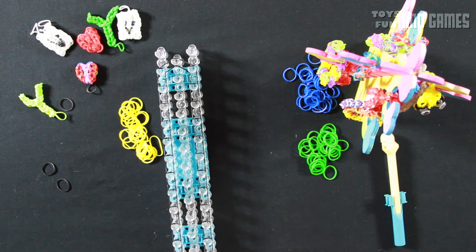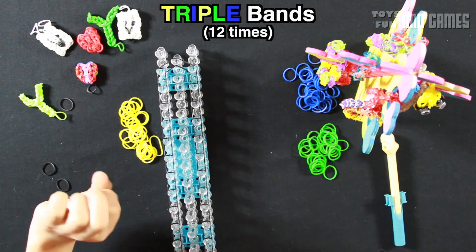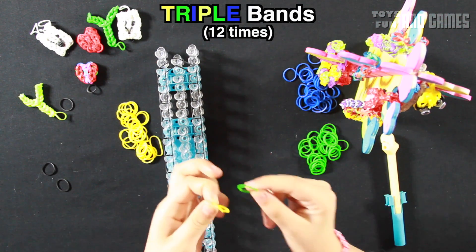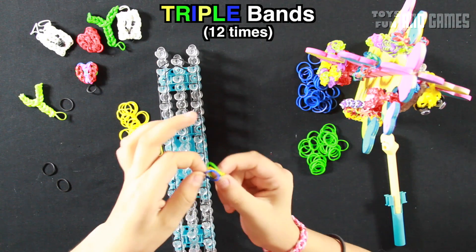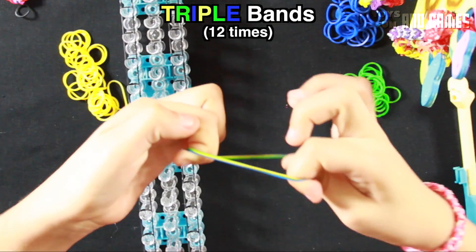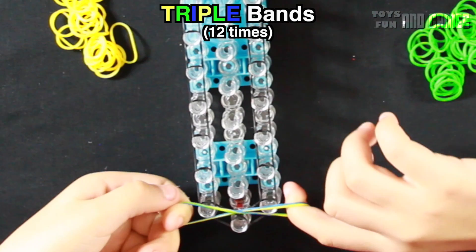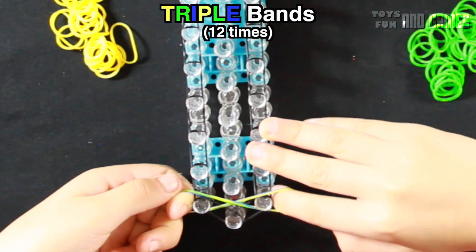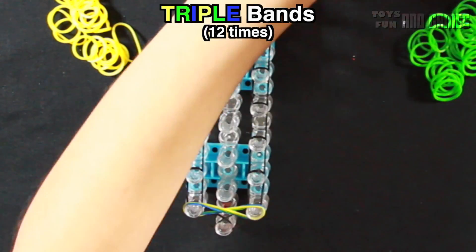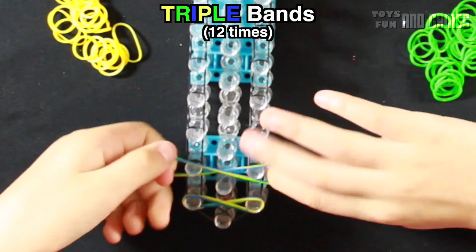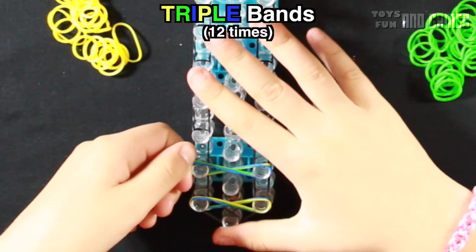And then we're going to grab yellow, and our green, and our blue. And what we're going to do is stretch it, and make a figure eight, and then put it on the first set, right here. And grab our other rubber bands, and make a figure eight, and put it on the second peg.